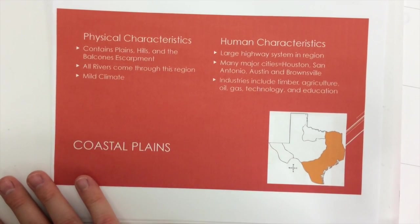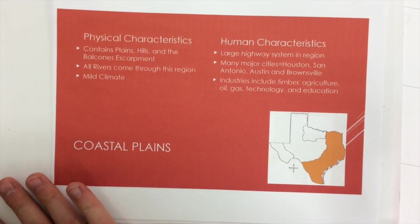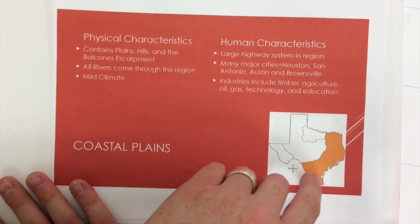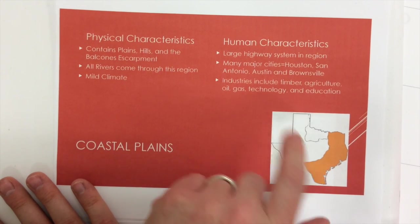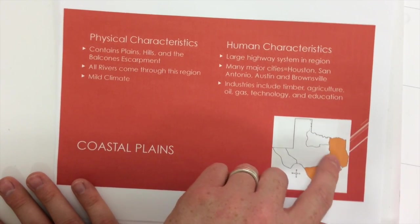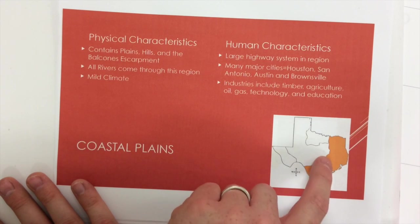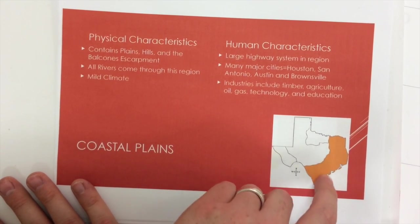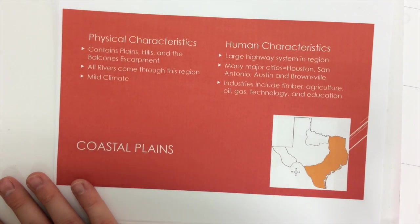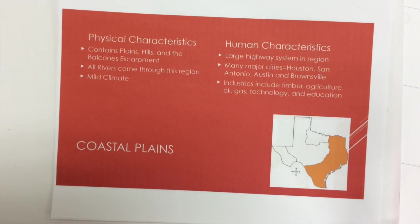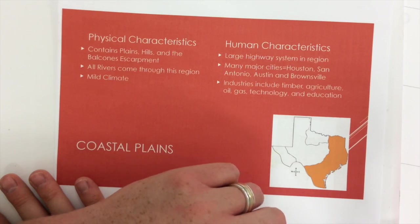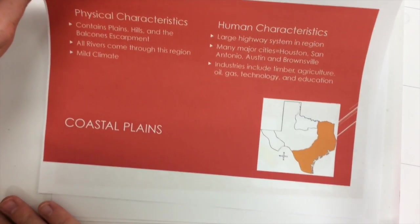The major industries in this area include the timber industry, agriculture, oil, gas, technology, and education. There are lots of universities in this area. We'll have lots of timber especially in eastern Texas, and agriculture is good in eastern Texas and closer to the central plains. Oil and gas especially along the coast east of Houston — that's called the Golden Triangle, where lots of oil and gas refineries are. There's lots of technology especially in the Austin area.